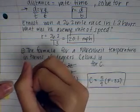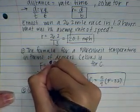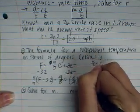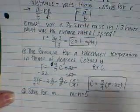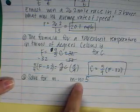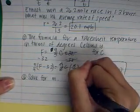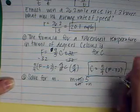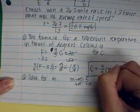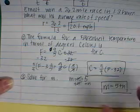Number three, solve for m if m minus n equals five. If we want m by itself, we're going to look at what's happening to it. It's being subtracted by n. The opposite of subtract is add. So, if I add n to both sides, my answer is m equals five plus n. And I can't combine five and n because they're not like terms.